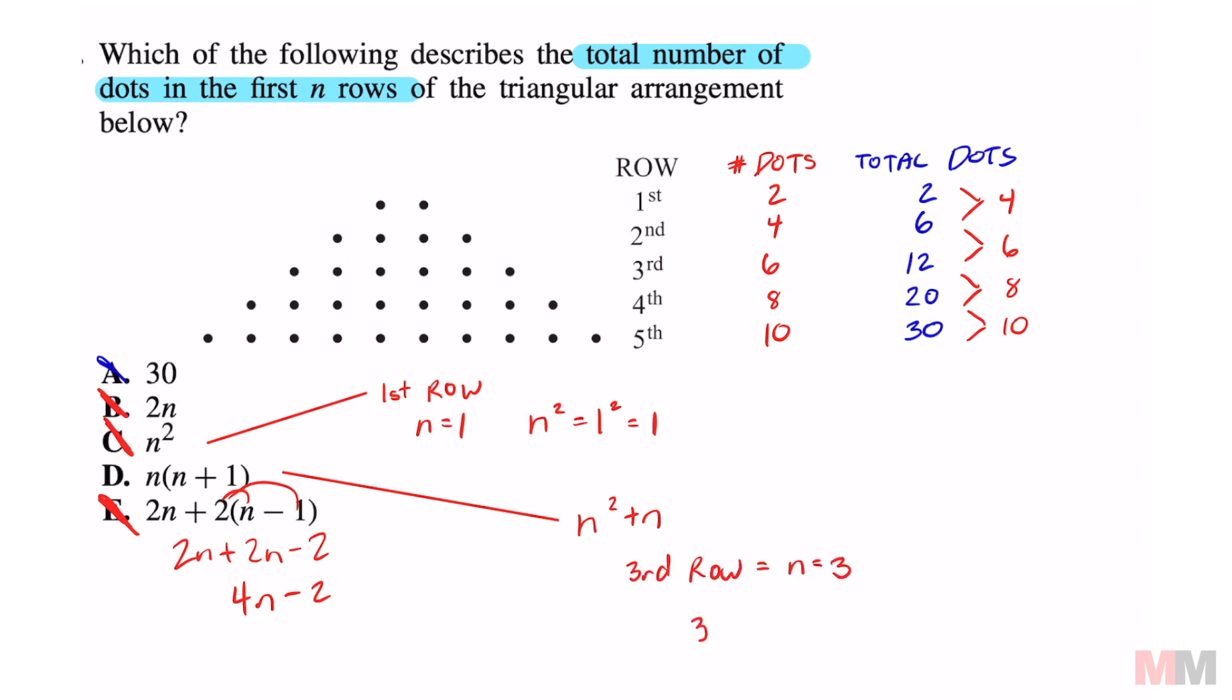That's going to be 3² + 3, which equals 12. And if you look at the third row, the total is 12, which matches.